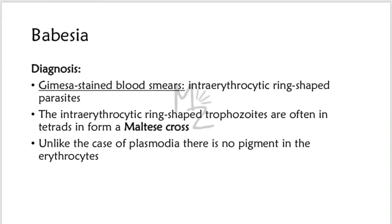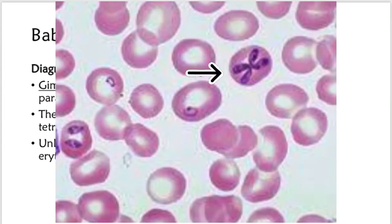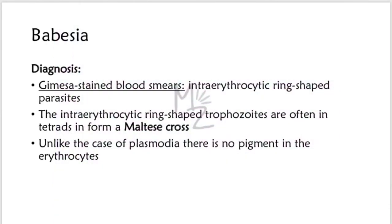Diagnosis: Diagnosis is made by seeing intra-erythrocytic ring-shaped parasites on Giemsa-stained blood smears. The intra-erythrocytic ring-shaped trophozoites are often in tetrads in the form of a Maltese cross. Unlike the case of plasmodia, there is no pigment in the erythrocytes.